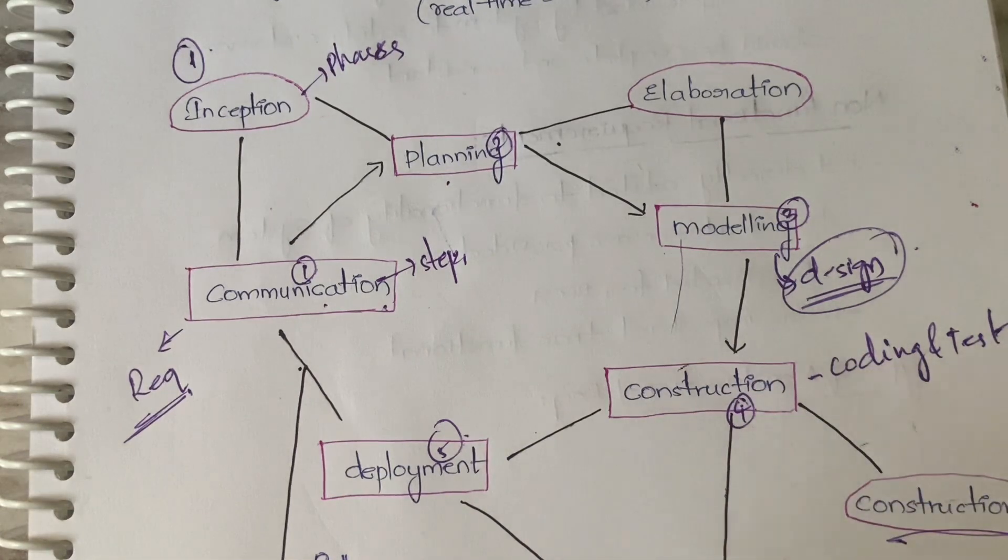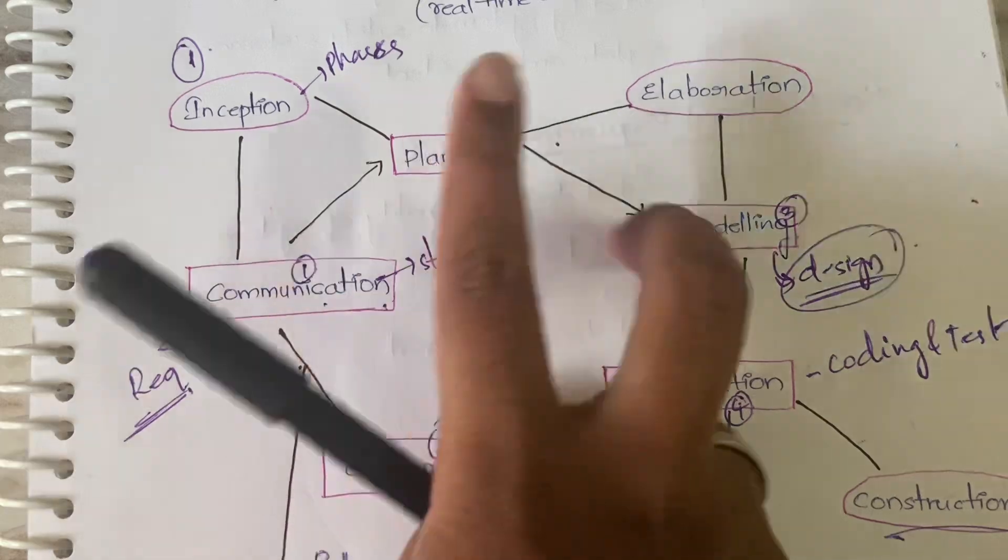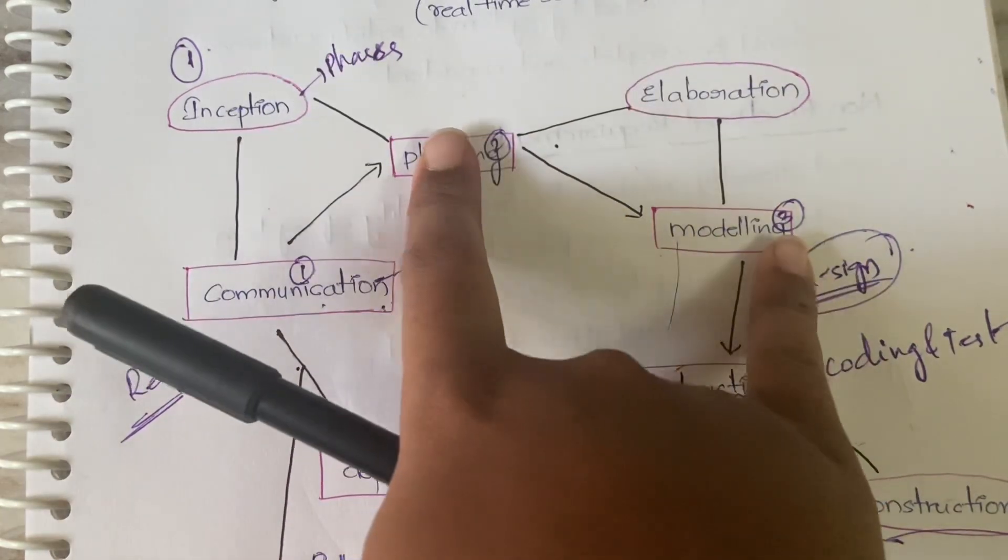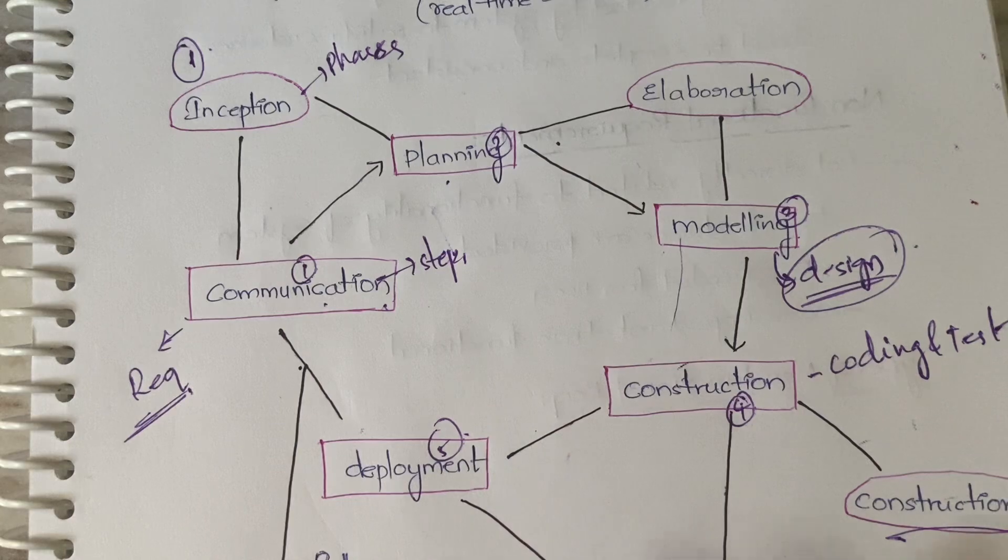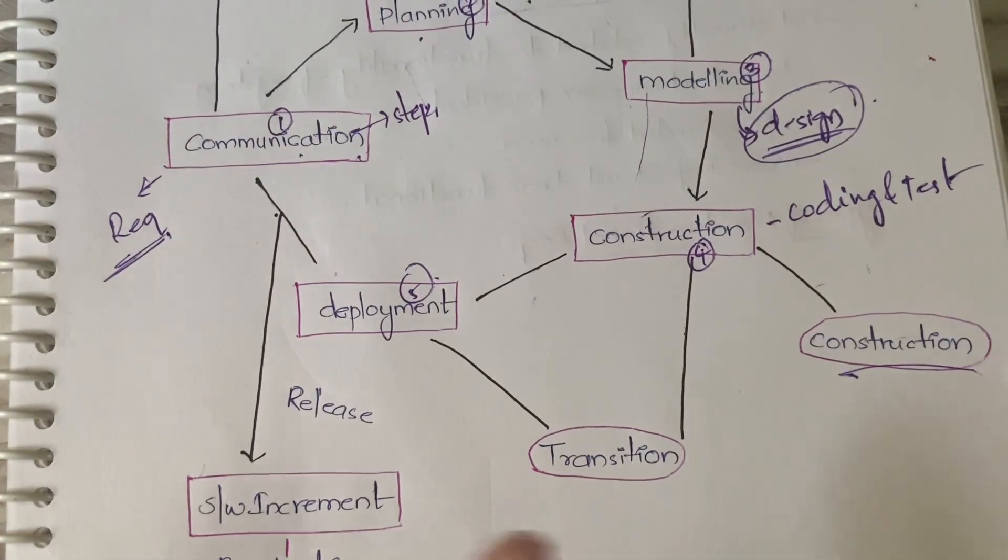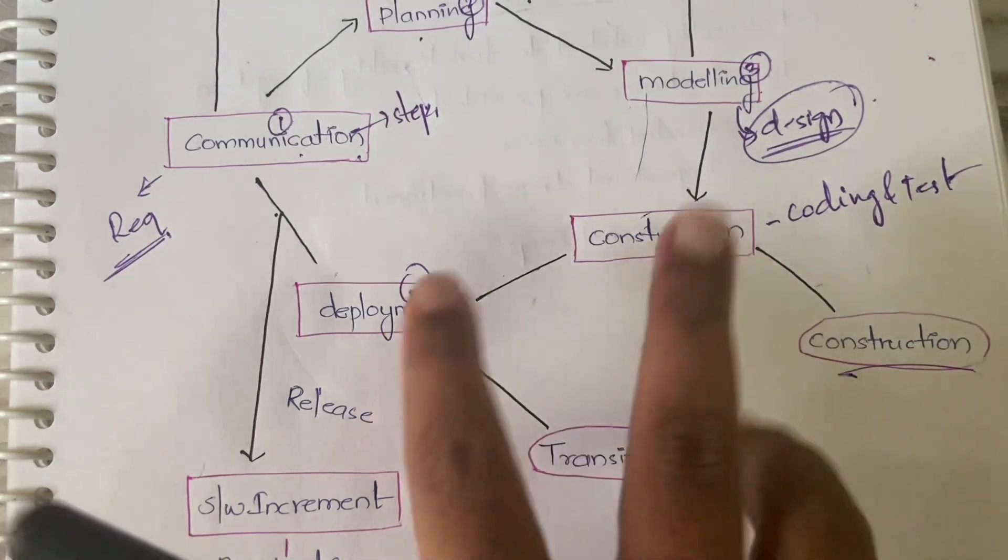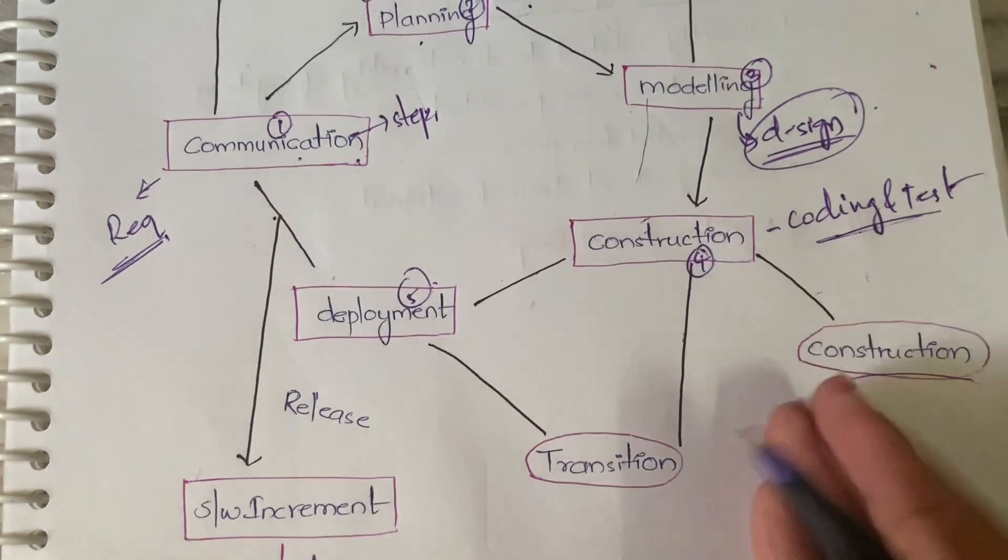In construction, it has only one - it is not a combo. Inception is a combo of communication and planning, elaboration is a combo of planning and modeling, but construction is just construction. Next you have transition, the fourth one. In transition it is a combo of construction and deployment, and testing also will be done.